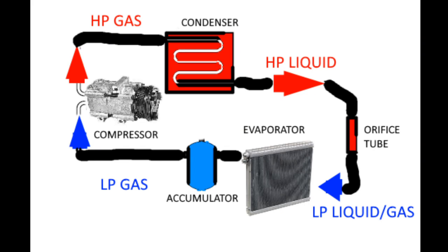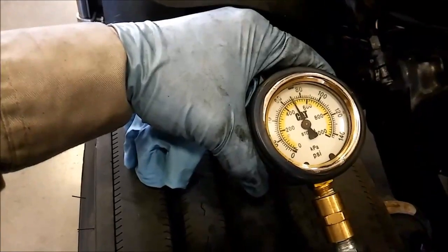This is part two of the AC course, discussing component identification and function. By the end of the class, you will be able to understand this picture. This is the practical portion — not just basics, but component identification, the location of the components, how they work, and some basic troubleshooting.